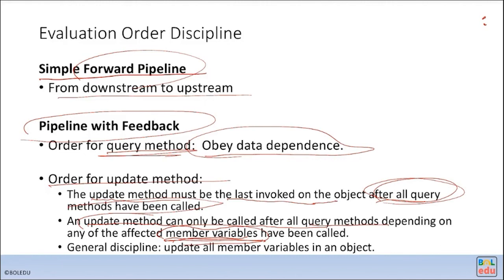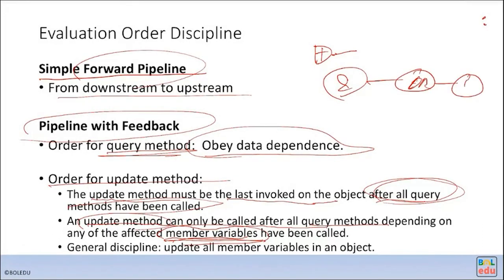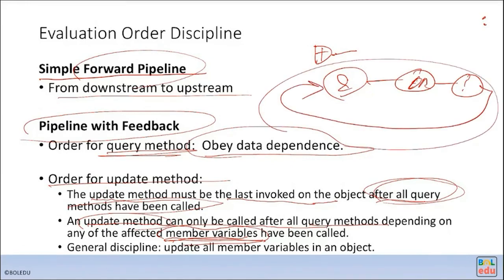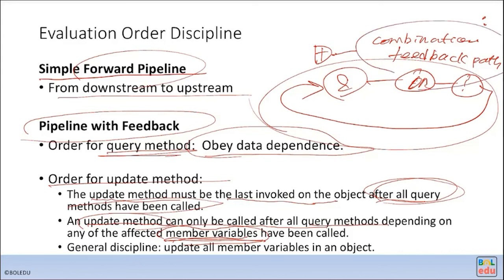For a truly combinational feedback loop — for example, an AND gate feeding into an OR gate feeding into a NOT gate and back — there is no way to model this behavior using sequential C code. In fact, this kind of design is forbidden: you are not supposed to design a circuit with a combinational feedback path. That is a very poor design.